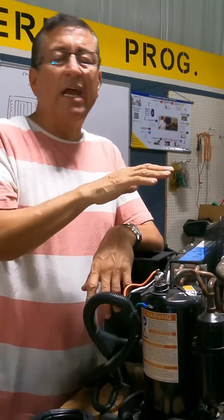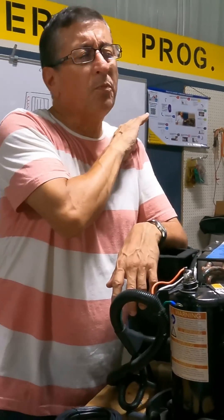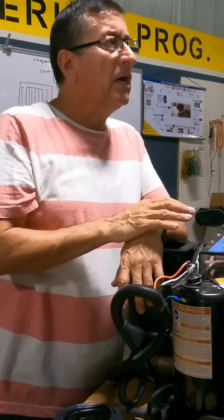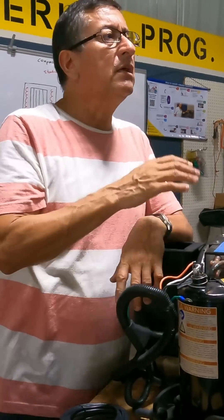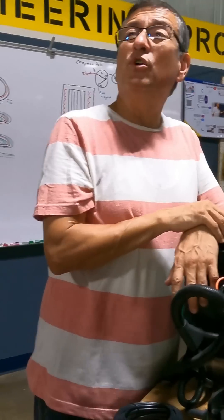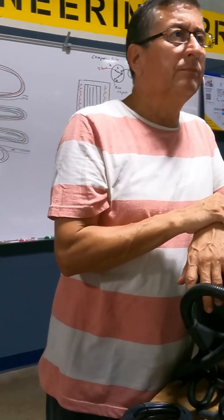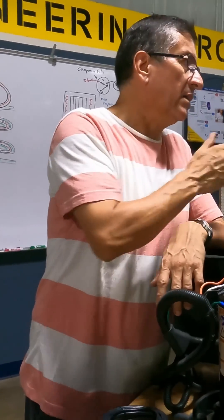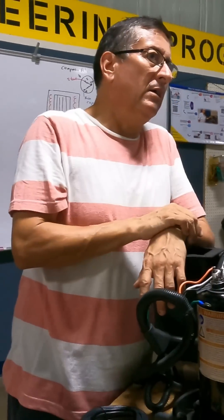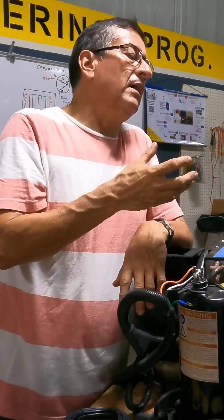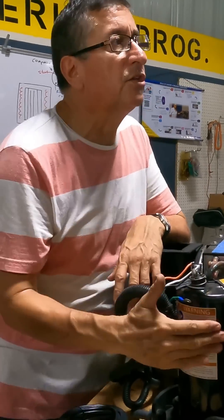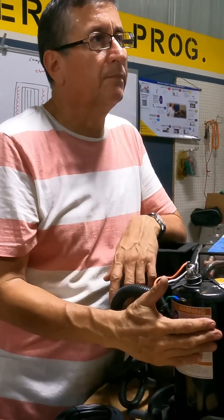When he added the refrigerant, the compressor worked perfectly for two weeks. And then yesterday, once again, the compressor would not start. The problem? There was a leak — he never fixed the leak. He just added refrigerant, the refrigerant leaked out again, humidity entered the system, and destroyed the compressor. Compressor gone.